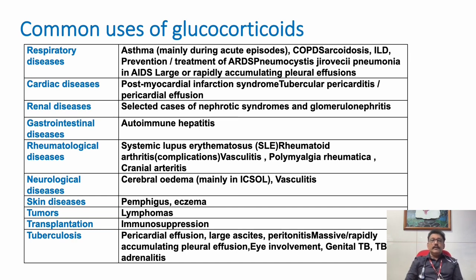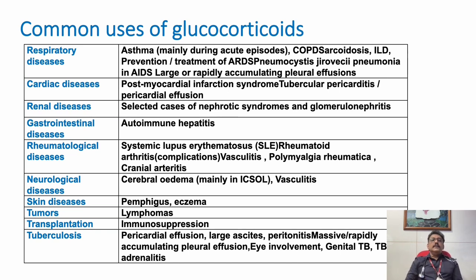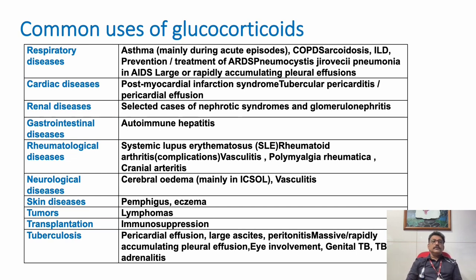For cardiac conditions, routinely we don't use steroids, but patients having tubercular pericarditis — which can produce constrictive pericarditis — can be given steroids to prevent that fibrosis. Post-myocardial infarction syndrome or Dressler syndrome can also be treated with steroids. Some pericardial effusions, including massive pericardial effusions, can be treated with steroids to prevent constrictive pericarditis.